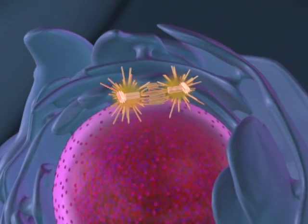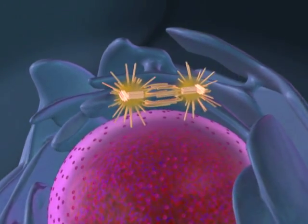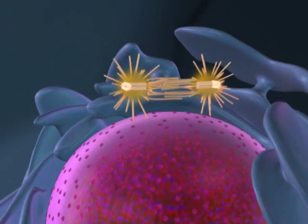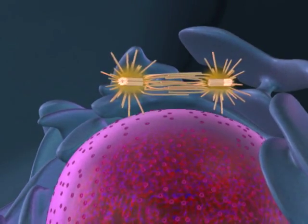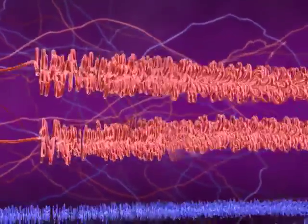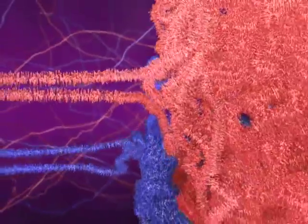As meiosis begins, a spindle forms and duplicated centrosomes start to migrate toward opposite poles of the cell. Back in the nucleus, the chromosomes are condensing.